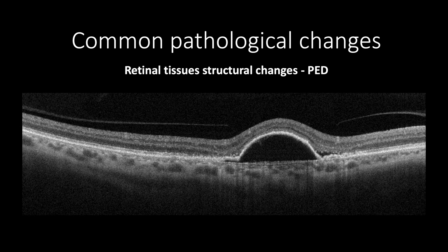Pigment epithelial detachment, or PED, is a separation of the RPE layer from Bruch's membrane due to the accumulation of fibrovascular, blood, serous, or drusenoid material. When both the RPE and Bruch's membrane are visible, it forms a double-layer sign, as Bruch's membrane is not normally visible on spectral domain OCT. The double-layer sign can be found in central serous chorioretinopathy, polypoidal chorioretinopathy, fibrovascular pigment epithelial detachment, and cases of PED with pachychoroid. In this OCT cross-section, both RPE and Bruch's membrane are visible, forming a double-layer sign, with fluid accumulation between layers and the presence of subretinal fluid, indicating an active choroidal neovascular process.